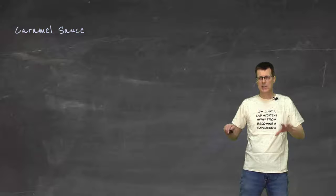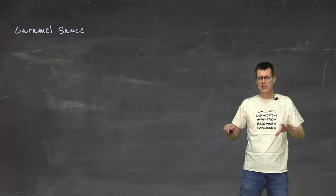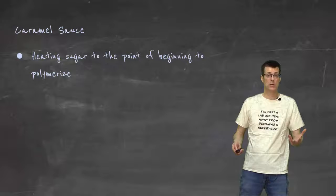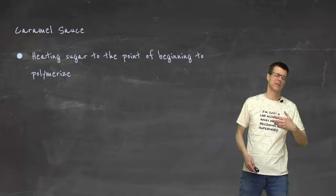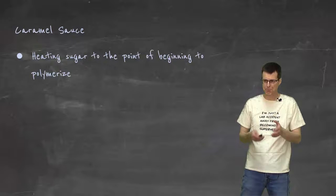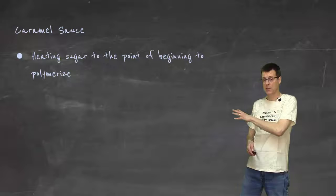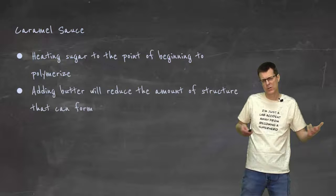You can also do something similar on a slightly lower level with making caramel sauce. Basically, all you really need to make caramel is sugar and heat and you caramelize it. But by adding different things, you know I've seen people, they've added cream, they've added butter, they've added a couple of other different options. What that does is it interrupts the caramelization process and interrupts the forming of the polymers. And so what happens is it reduces the amount of structure that can form, so it reduces the solidity.